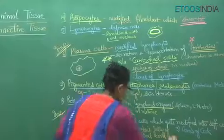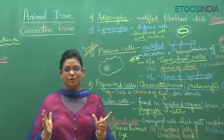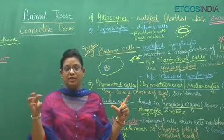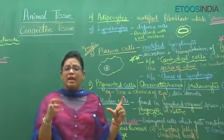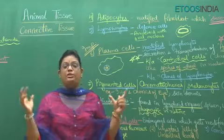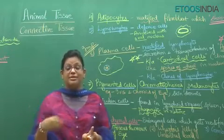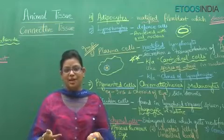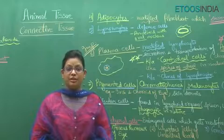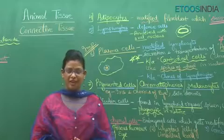To summarize today's class: connective tissue is the second type of animal tissue — most abundant, most widespread, constituting 30% of total body weight. Its matrix has ground substance and three types of protein fibers: rigid collagen, flexible elastic, and reticular fibers. Its cells include fibroblasts, macrophages, mast cells, adipocytes, plasma cells, lymphocytes, pigmented cells, reticular cells, and mesenchymal cells. Next class we will read about the types of connective tissue. Happy learning!